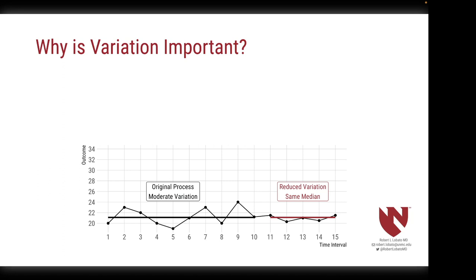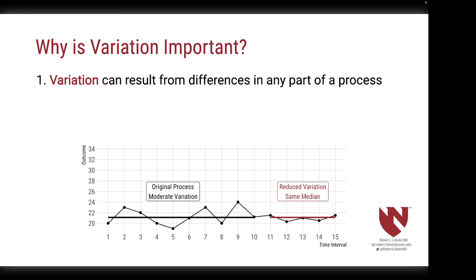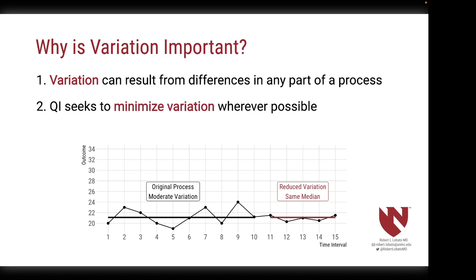So why is variation important? Variation can result from differences in any part of a process. The goal of quality improvement is to minimize variation wherever possible. Run charts can really help us do that.